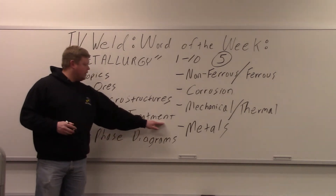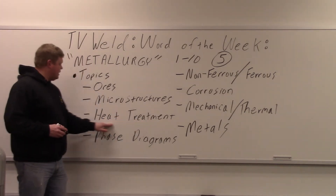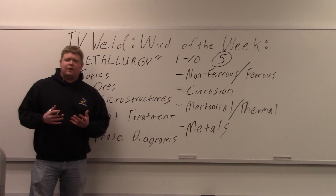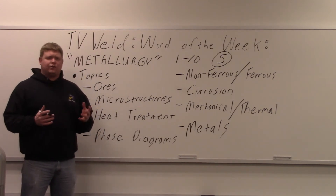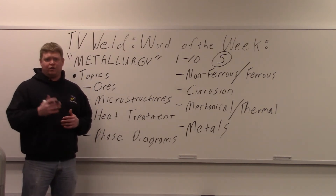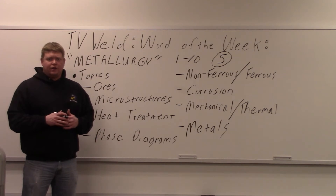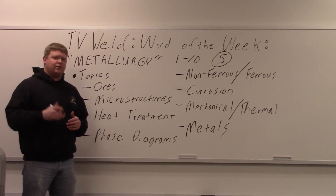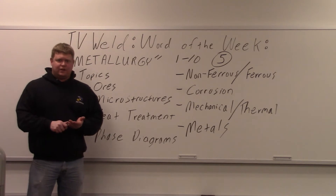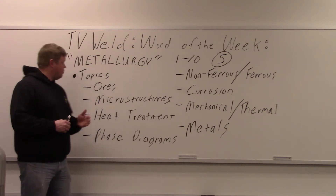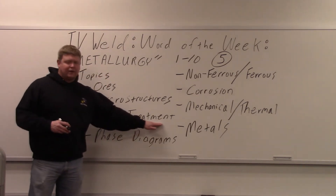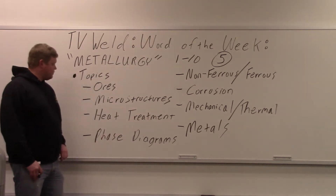Heat treatments — metallurgy deals a lot with heat treatments. What happens atomically when you're heating up metals and then cooling them? For example, cooling carbon steel too quickly makes it hard. If you want to bring hardened steels back, you're going to do annealing, tempering, normalizing — things like that. Metallurgy covers what's going on atomically in the metals.